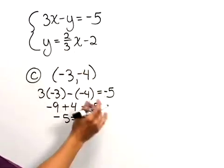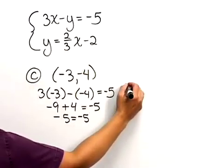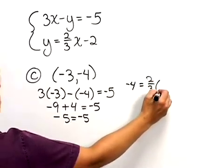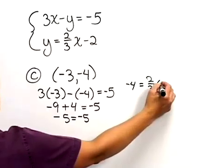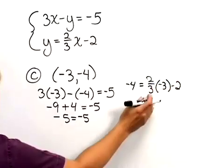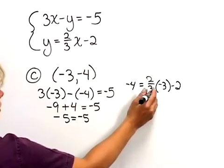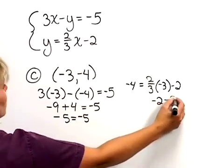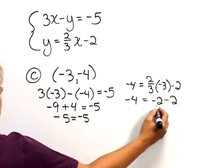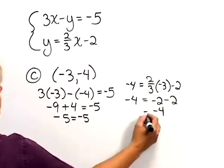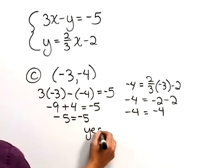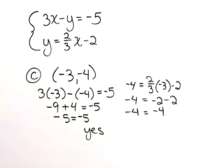Let's check the second equation. Our y is negative 4. We want to know if that equals 2 thirds times negative 3 minus 2. When we multiply we get negative 2 minus 2 on the right hand side. When we combine those we get negative 4 equals negative 4. So yes, this point is a solution.